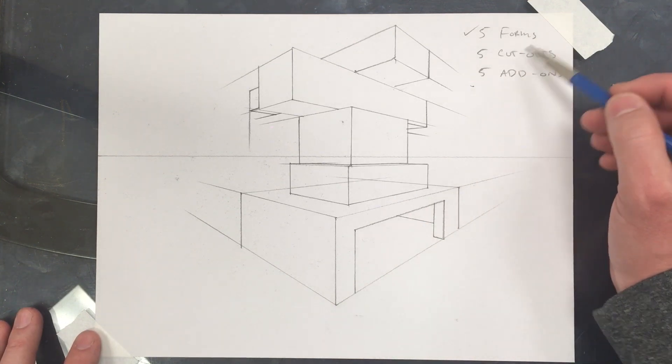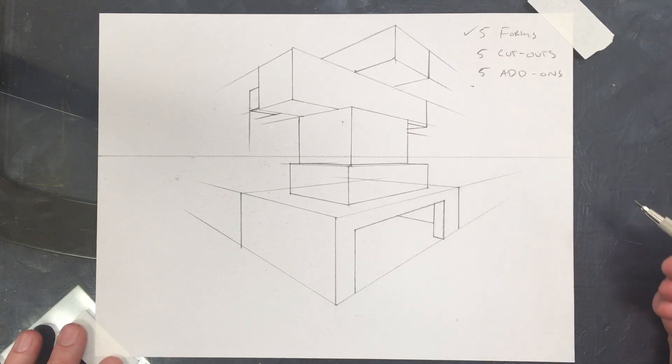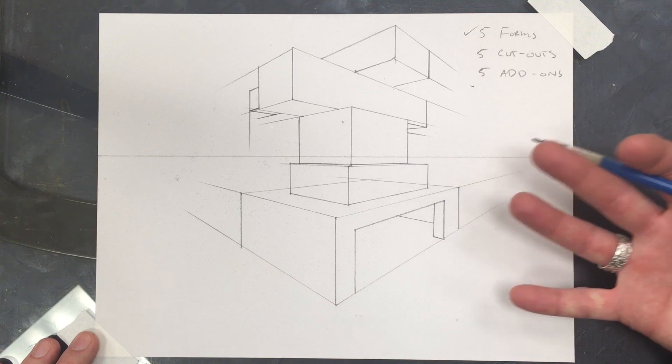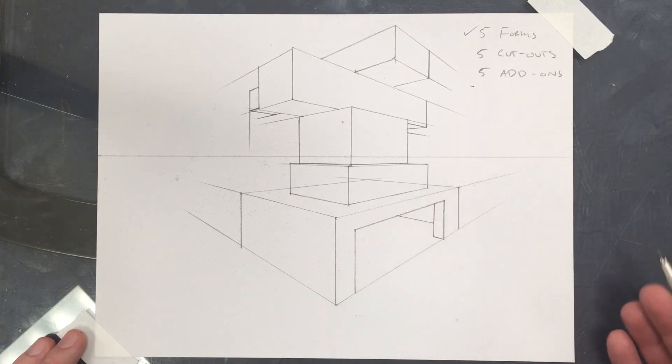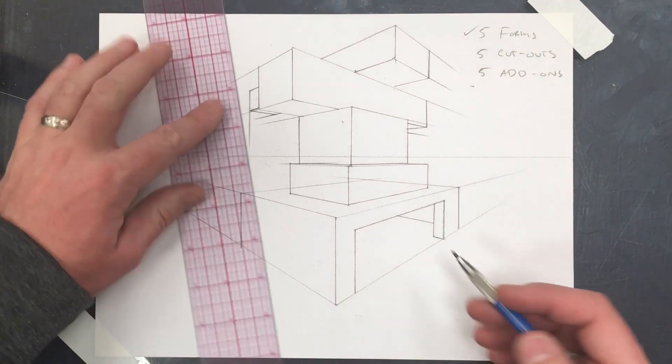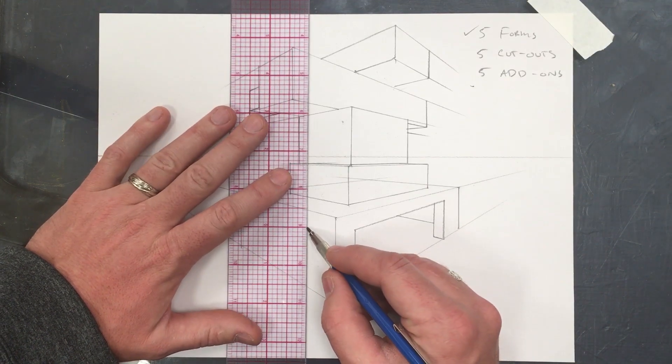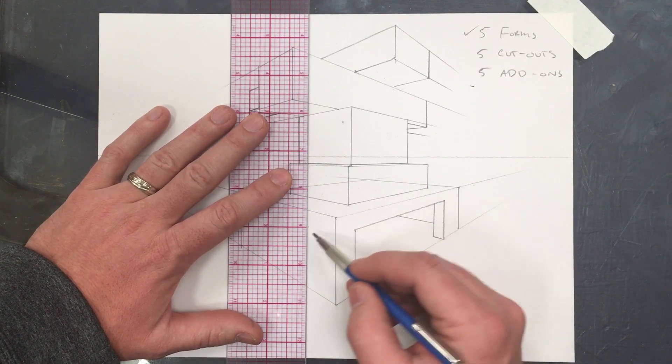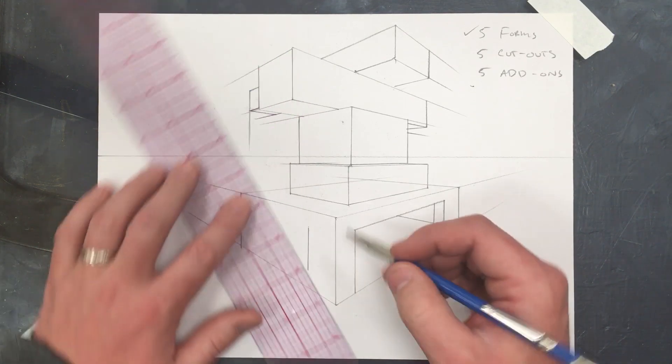Now, I'm not going to spell out all five cutouts, because I want to not limit the creativity of those that are viewing this, but as another example, you could say, maybe I need a window, and let's put a window in here.